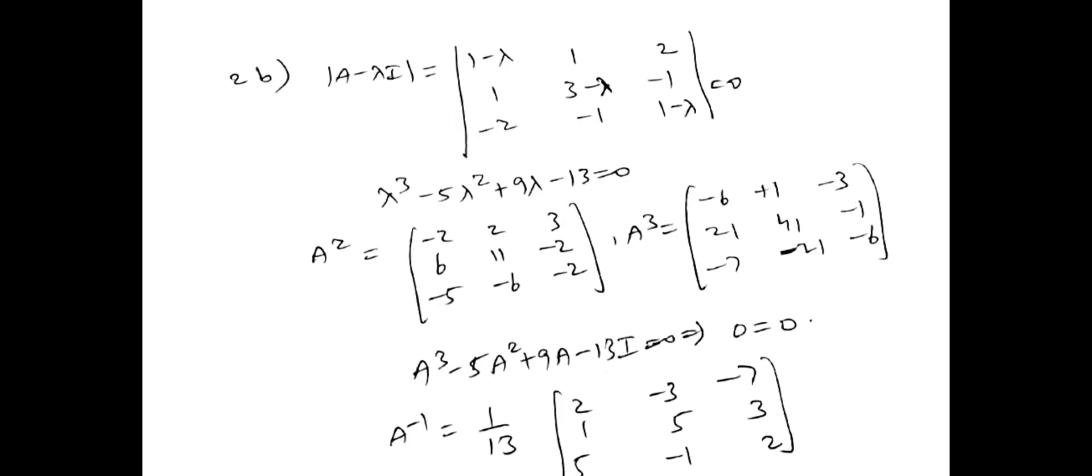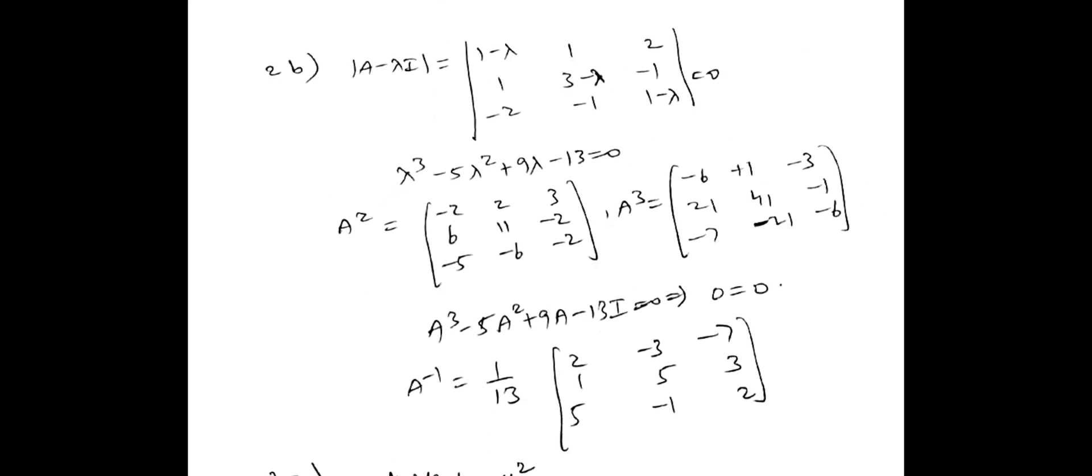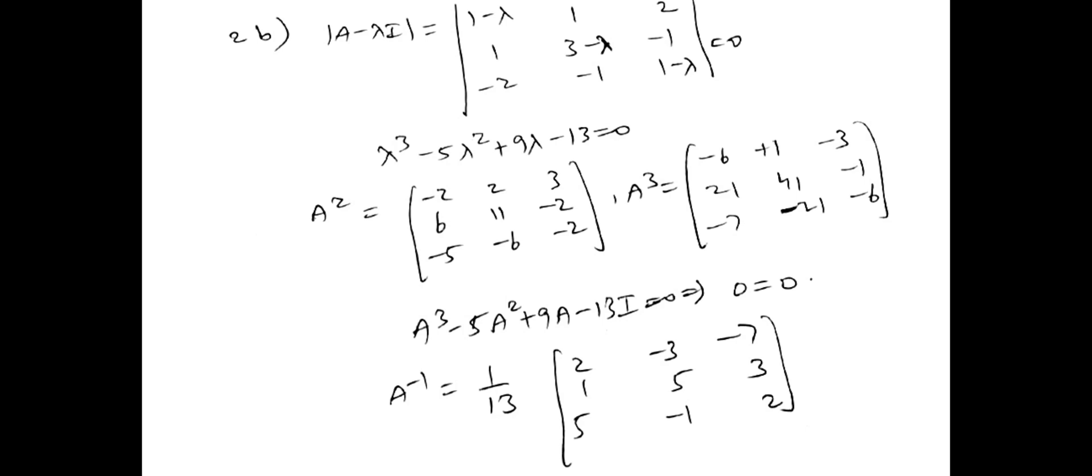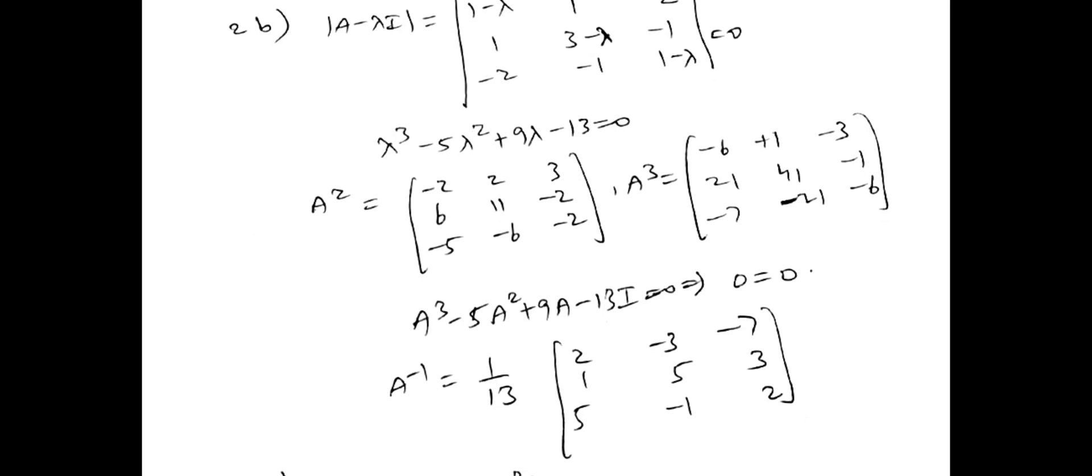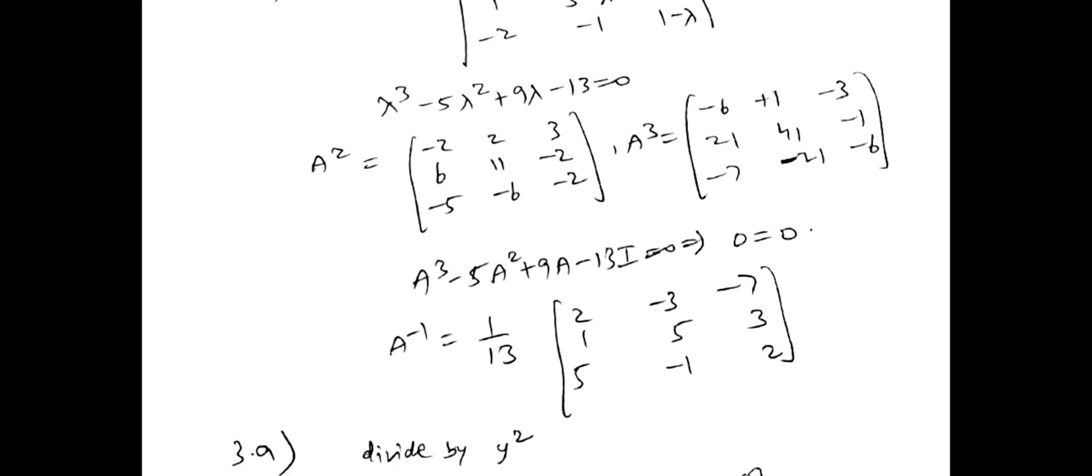Then next B bit. These answers are little bit direct mode we did. Actually this is the key for the paper. 2b. Characteristic equation mod a minus lambda i. If you simplify you get lambda cube minus 5 lambda square plus 9 lambda minus 13 is equal to 0. Then find out a cube a square. You will substitute and you will get the 0 and find a inverse.